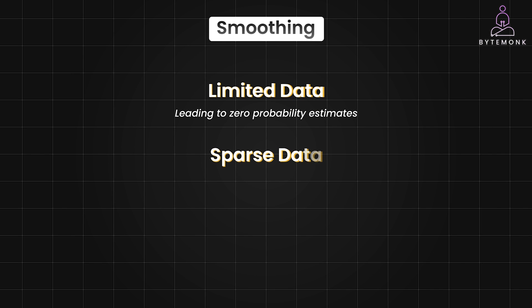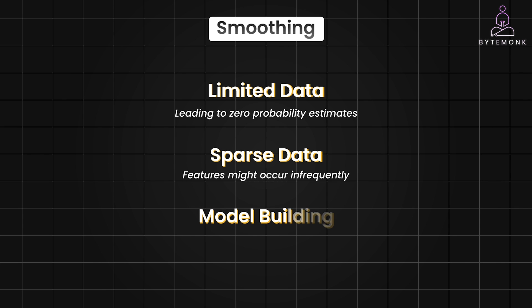In some cases, you might have a large amount of data overall, but some specific combinations of events or features might occur infrequently. Smoothing helps to distribute the probability mass more evenly across different events, making the model more robust to rare occurrences. Smoothing is also often used in building probabilistic models, such as language models and Naive Bayes classifiers. By smoothing the probabilities, you can prevent overfitting to the training data and improve the model's ability to generalize to new data.